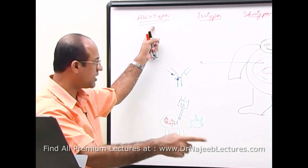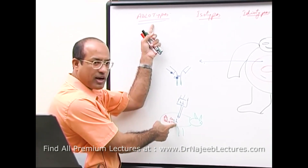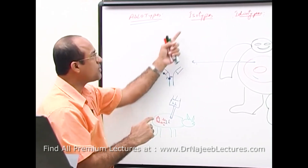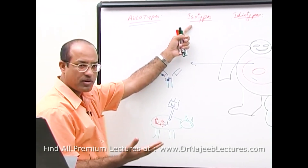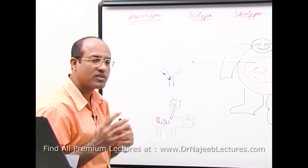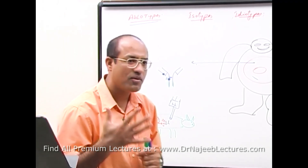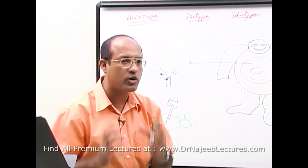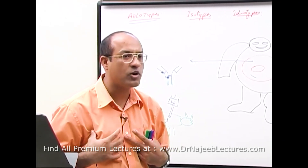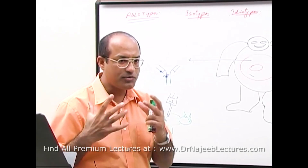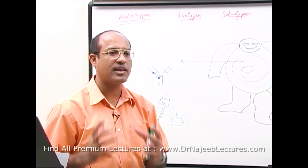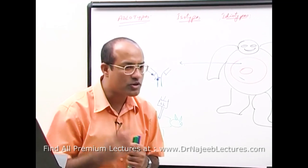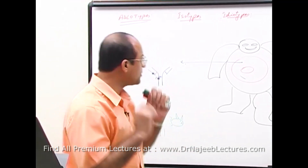So, one person has how many isotypes? Five. Or when one person's antibodies are classified according to allotyping, how many allotypes are present in one person? One. And if one person's all antibodies are classified according to isotypes, how many groups are there? Five.